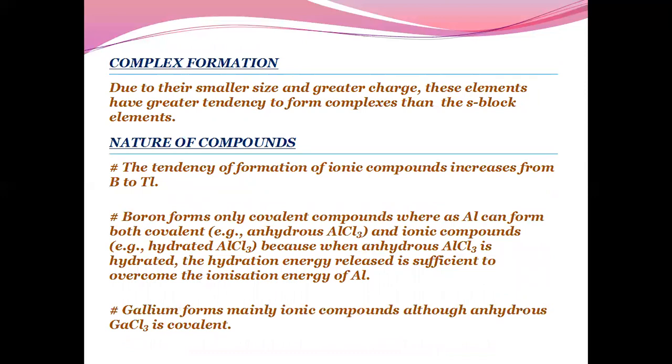Complex formation: Due to their smaller size and greater charge, these elements have greater tendency to form complexes than S-block elements. Nature of compounds: The tendency of formation of ionic compounds increases from boron to thallium. Boron forms only covalent compounds whereas aluminium can form both covalent, that is anhydrous aluminium chloride, and ionic compound, that is hydrated aluminium chloride. Because when anhydrous aluminium chloride is hydrated, the hydration energy released is sufficient to overcome the ionization energy of aluminium. Gallium forms mainly ionic compounds although anhydrous gallium chloride is covalent.